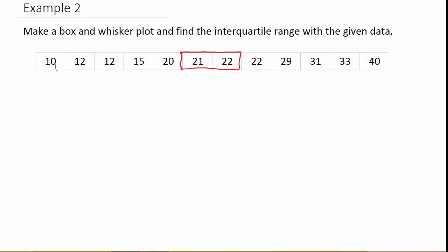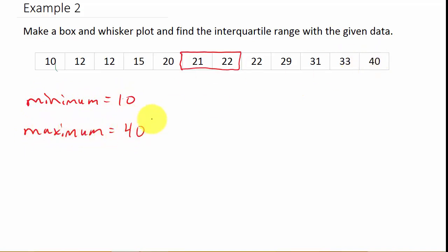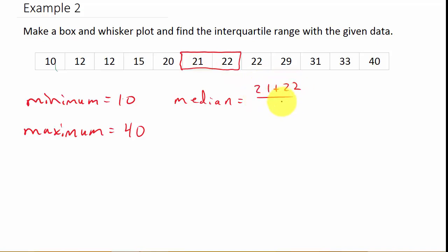Before we do the median, let's go ahead and write down the minimum, which is 10, and the maximum, which is 40. Remember, just like the first example, the data needs to be ordered from smallest to largest. Now for the median — since we have two numbers in the middle, it's the average of these two: 21 plus 22 over 2, which equals 21.5. So that's our median, our second quartile.